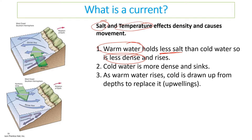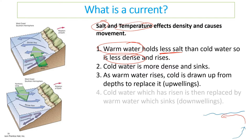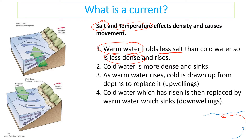As warm water rises, cold water is drawn up from the depths to replace it. The warm water then moves and the cold water rises to fill the gap, while the warm water sinks to replace the cold water. This creates a current and the water circulates. This is a very important concept that could be a key part of a big exam question.